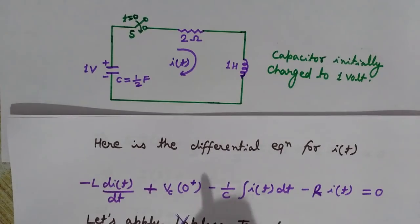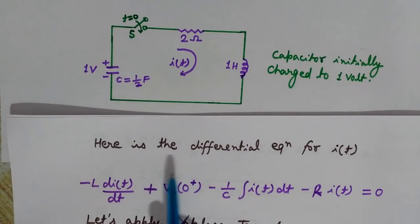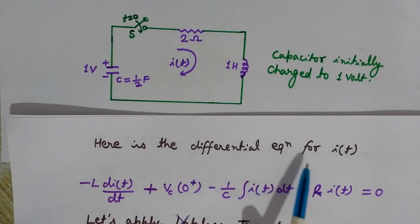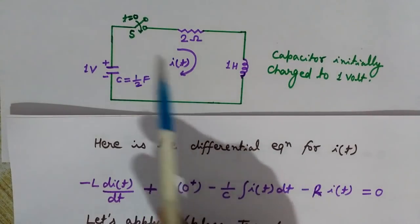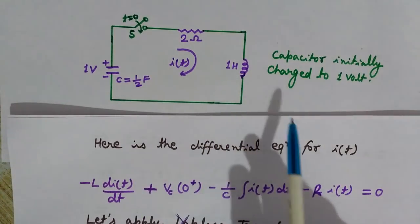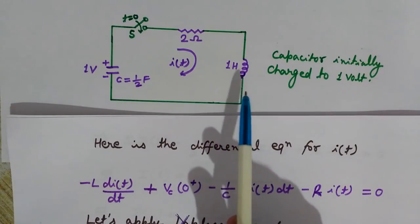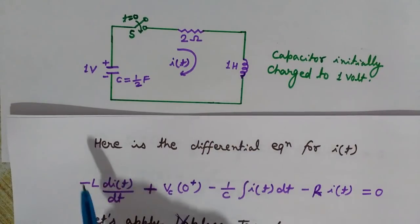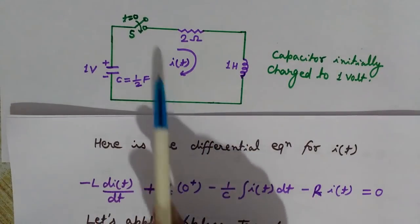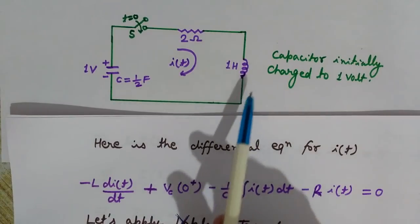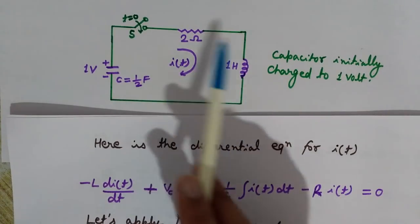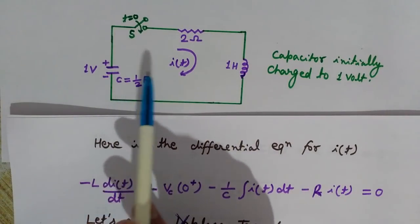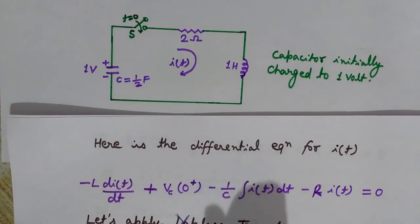We are going to write the differential equation of this series RLC circuit. We will apply KVL — Kirchhoff's Voltage Law. The net potential drop in this closed loop will be 0 according to KVL.